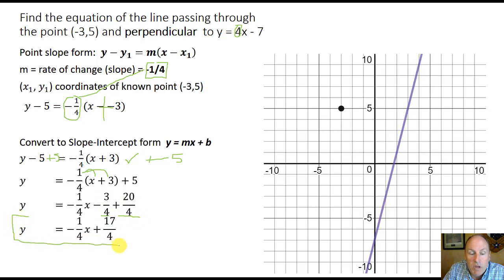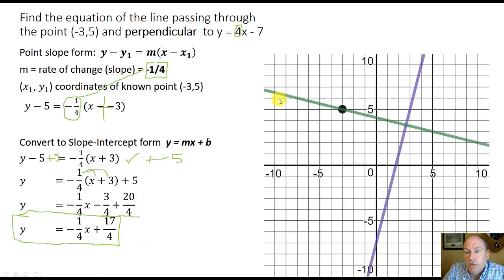So the equation in slope intercept form of our line that's perpendicular to the line 4x minus 7, and passes through negative 3, 5, is y equals negative 1 fourth x plus 17 over 4. Graphically, that line looks just like this green line. You can see that they are perpendicular to each other. They intersect at a 90 degree angle.